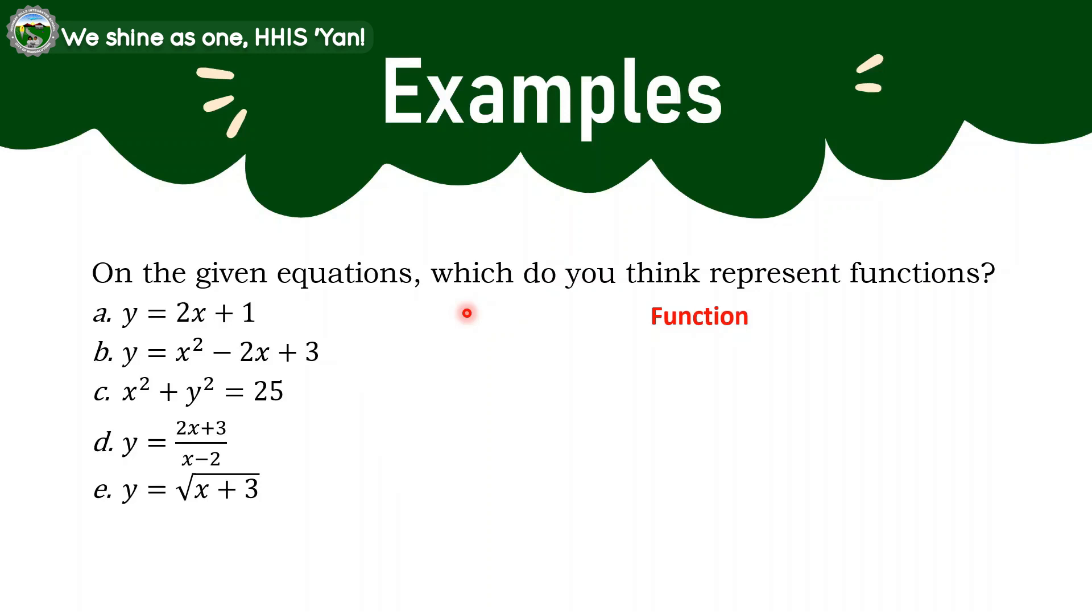You will just do the same for the rest of the examples in here. In the B, if you notice, this is a quadratic equation. So that is a function. So substitute any number. Let's say again, 2 in here. 2 squared is 4 minus 2 times 2. So 4 minus 4, that's 0 plus 3. The answer is 3. So function in B.